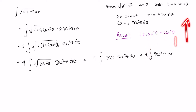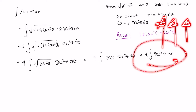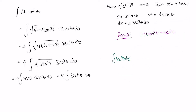If you haven't seen that video, you should be seeing a link come up in the top corner of the screen right now. You could click on that link and it will take you to the video where I show you how to integrate secant cubed theta. The integral of secant cubed theta d theta is equal to one half times secant theta tangent theta plus the natural log of the absolute value of secant theta plus tangent theta, plus a constant C.